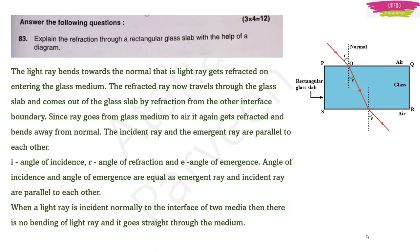Question 83 (4 marks): Explain refraction through a rectangular glass slab with a diagram. When a light ray enters the glass, it bends towards the normal due to refraction. It travels through the slab and exits from the other boundary, bending away from the normal (denser to rarer medium). The incident ray and emergent ray are parallel to each other. The angle of incidence equals the angle of emergence. When light is incident normally, there is no bending.